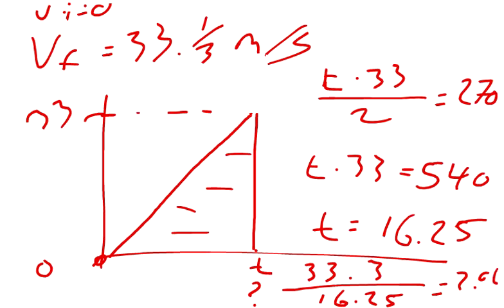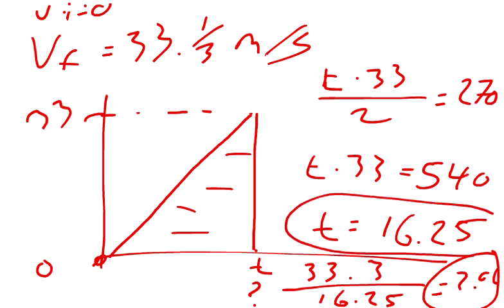The aircraft requires a minimum acceleration of 2.06 meters per second squared. The second part asks how long it takes the aircraft to become airborne. We already solved that when finding our change in time: 16.25 seconds.